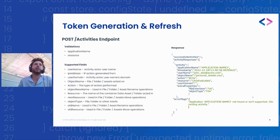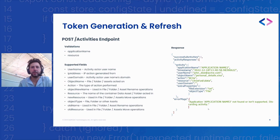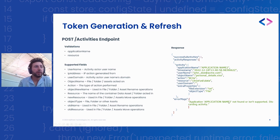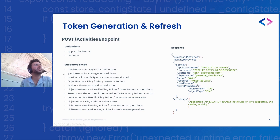The response confirms the number of successfully ingested activities, and any errors detected are reflected in the error message along with the relevant data. The only two validations performed are on the application name and the resource name, which are used to correlate to an application and a resource in File Access Manager. Username and IP address are not mandatory but can be added for greater visibility, and that information can be used to define policies, alerts, and reports.